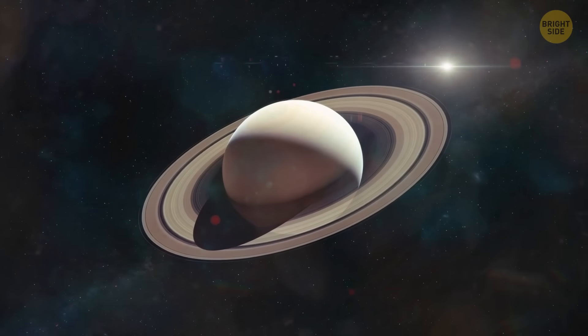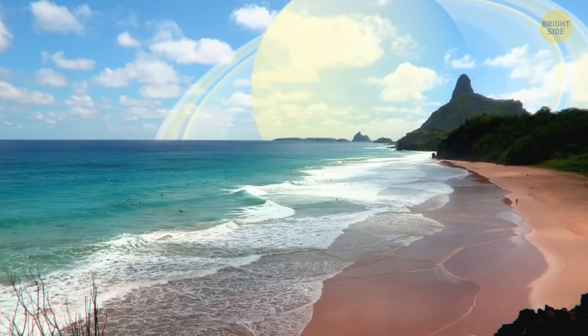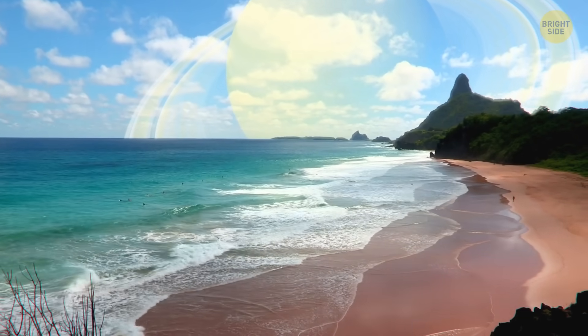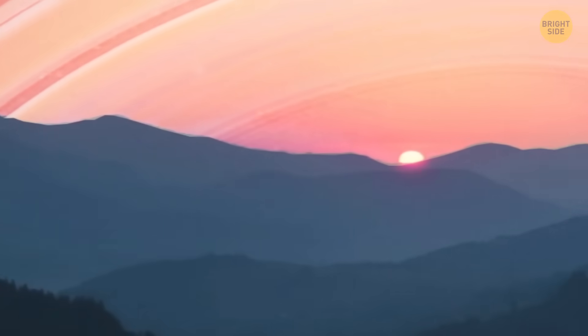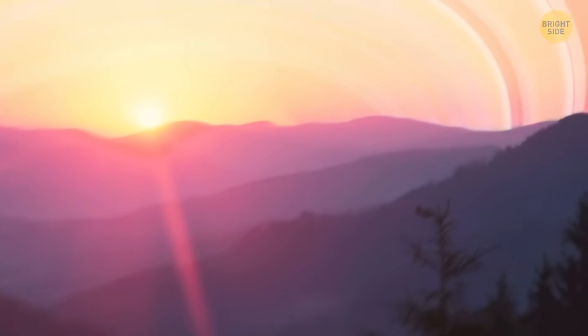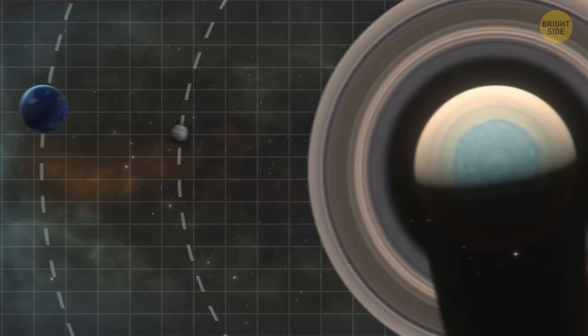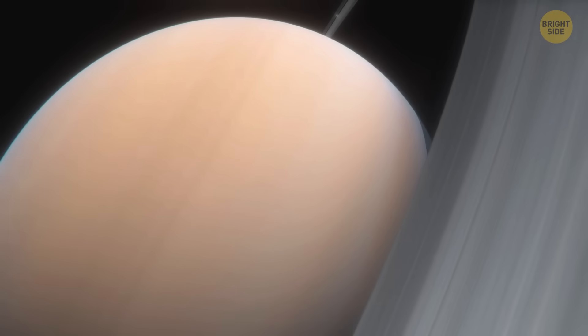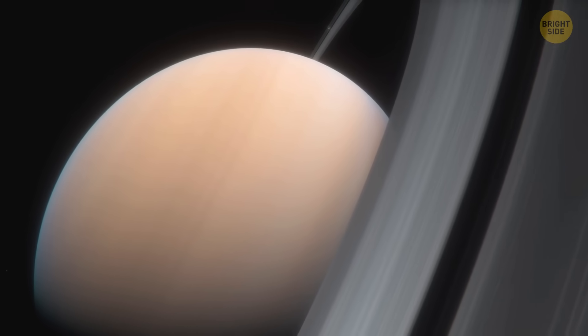If Saturn were to replace the Moon, it would be a sight to behold. The planet is more than 35 times larger than our satellite. It means the giant golden globe would cover 18 degrees of the sky. And its rings would stretch even further, from horizon to horizon. Earth would be a bit further away from the gas giant than its own moon, Dionne. And since Saturn is way more powerful than our planet, Earth would turn into its satellite, not the other way around.